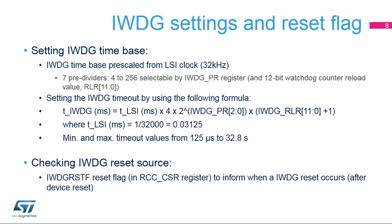Given the parameter limits, the IWDG timeout value can be between 125 microseconds up to 32.8 seconds. Once a reset is generated by the IWDG peripheral, the corresponding flag, IWDG RSTF, is set in the RCC CSR register to inform the source of the reset.